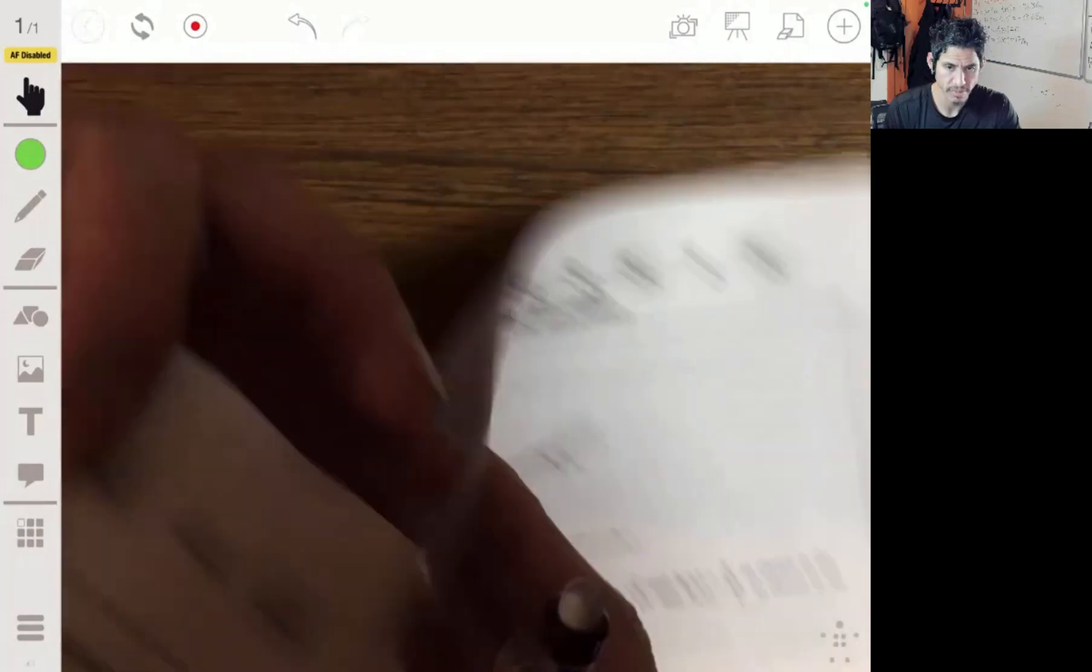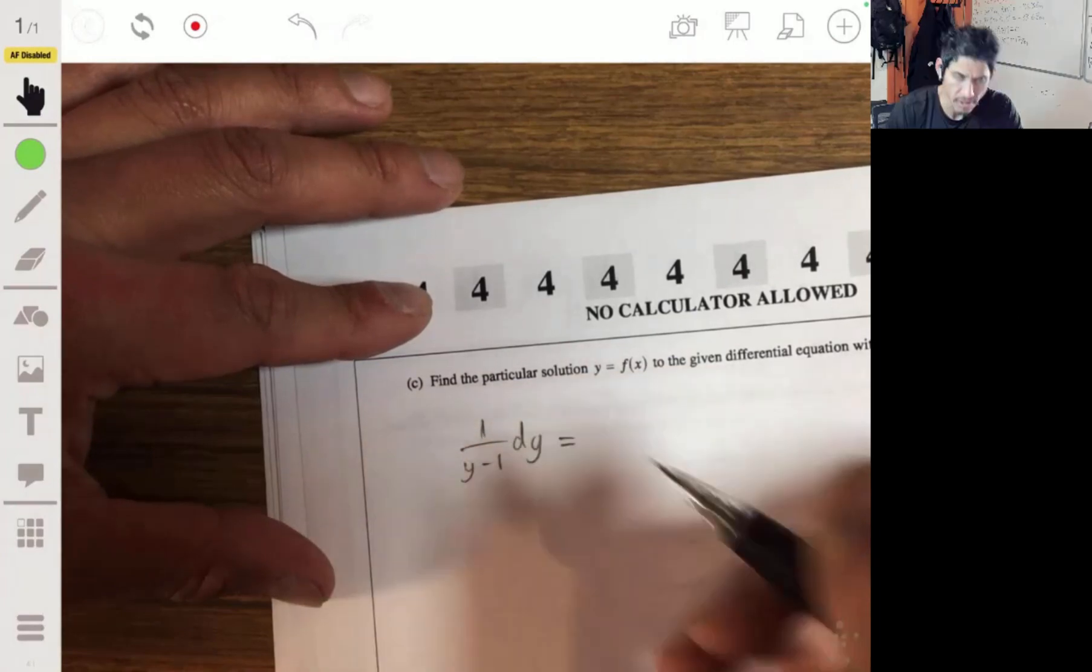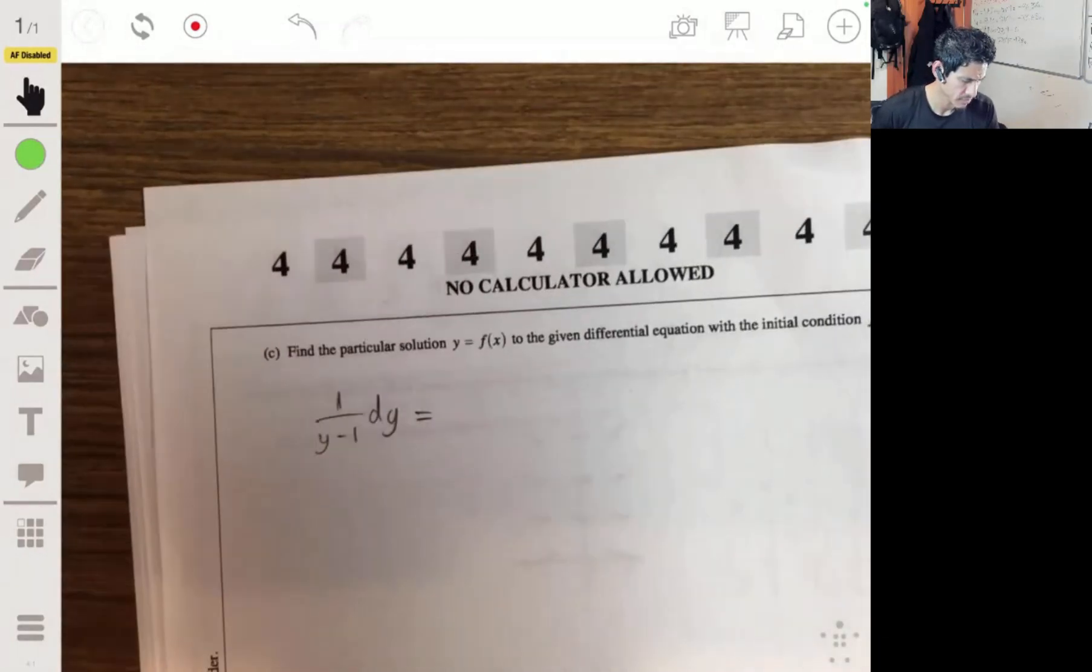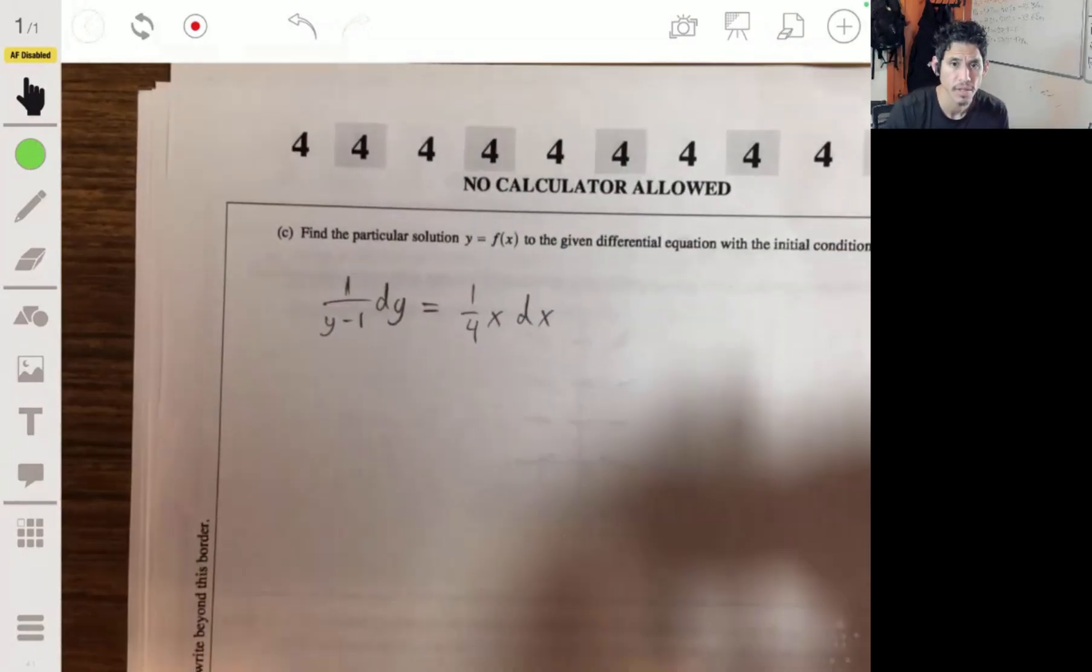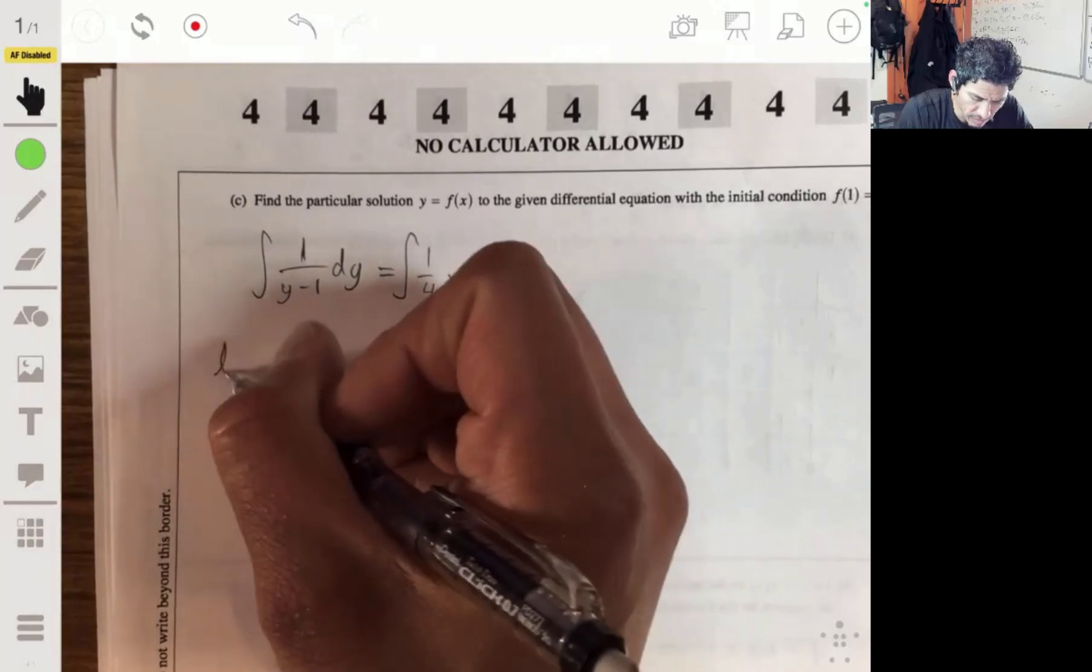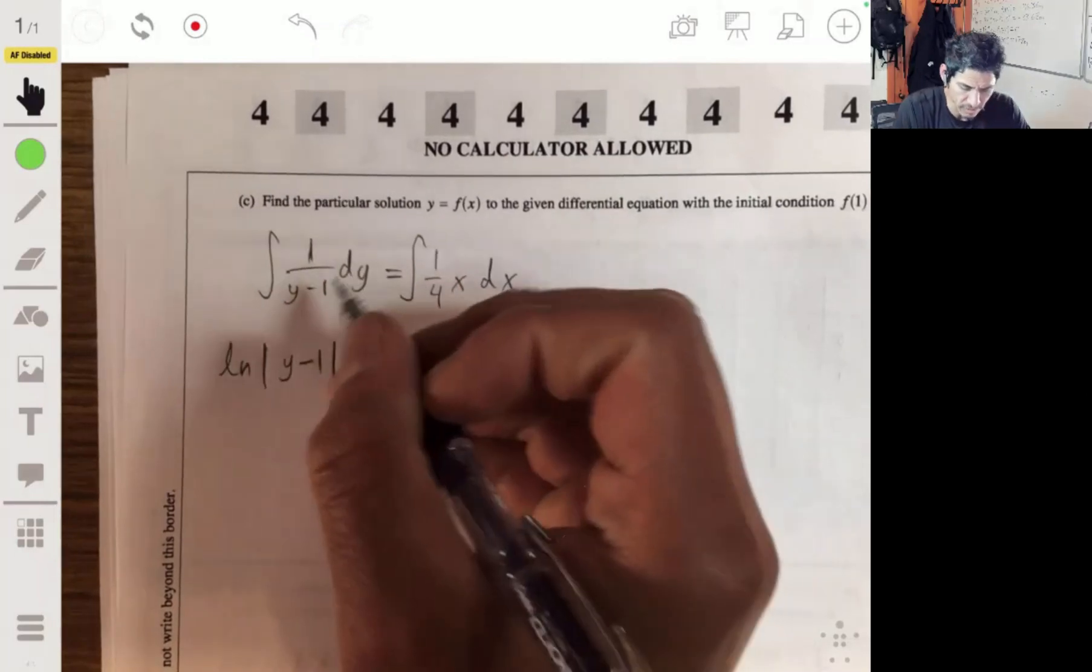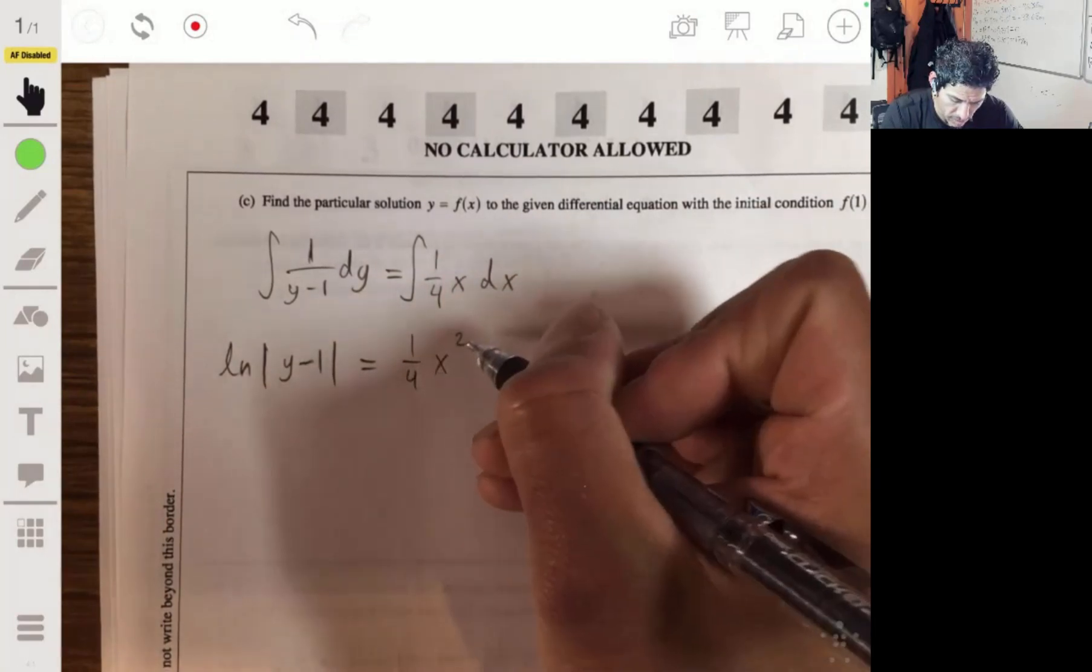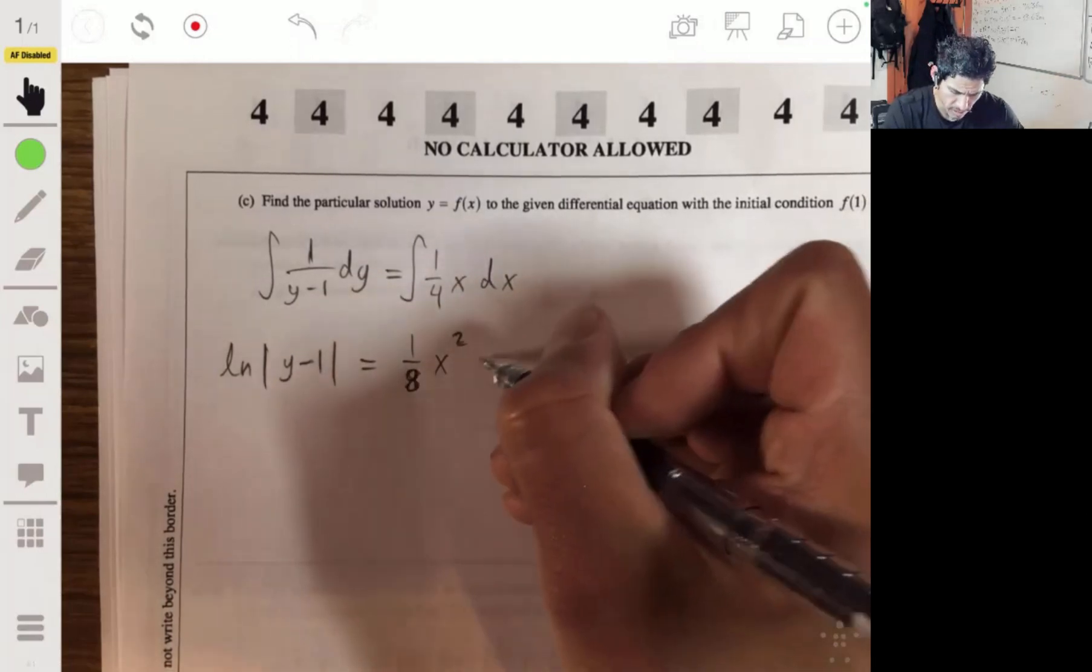So I'll have dy times 1 over (y minus 1) on the left, and on the right we're going to have the one fourth x dx. Then we integrate each side. Here, if you're just familiar with and done a lot of math like I have, you're gonna get a natural log of (y minus 1). This is just your basic reverse power rule. One fourth x squared over 2, so this changes into an eighth plus our constant c.